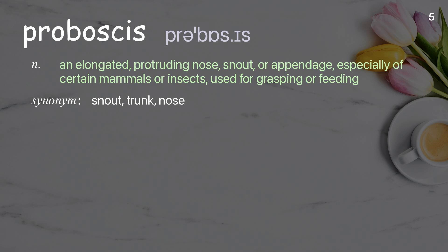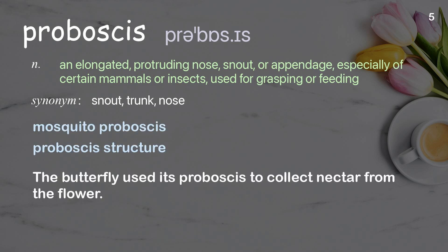Proboscis: an elongated, protruding nose, snout, or appendage, especially of certain mammals or insects, used for grasping or feeding. Examples: mosquito proboscis, proboscis structure. The butterfly used its proboscis to collect nectar from the flower.